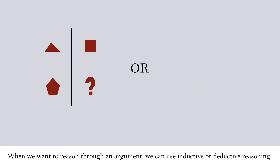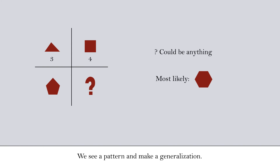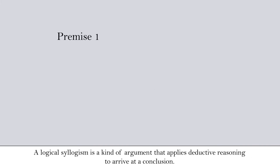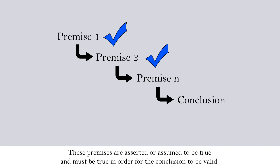When we want to reason through an argument, we can use inductive or deductive reasoning. Inductive reasoning relies on data to draw conclusions from, also stated as observation and inference — we see a pattern and make a generalization. Deductive reasoning is the process of reaching a conclusion based on an ordered set of premises. A logical syllogism is a kind of argument that applies deductive reasoning to arrive at a conclusion.